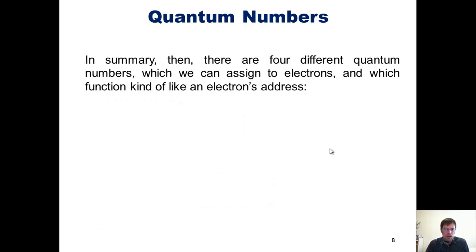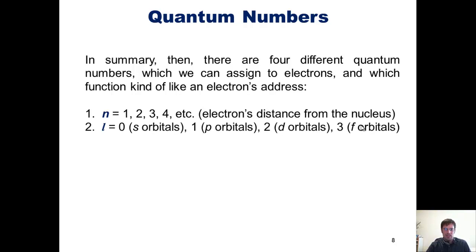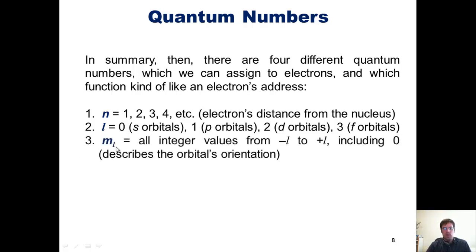In summary, then, there are four different quantum numbers, which we can assign to different electrons, and which function kind of like the electrons' address. The first quantum number is n, the principal quantum number. It can be 1, 2, 3, 4, and so forth. It says the distance the electron is from the nucleus. The second number is l, the azimuthal number. Zero for s orbitals, one for p orbitals, two for d orbitals, and three for f orbitals. Third is the m sub l quantum number. This can be any integer value from negative l to positive l, including zero, and describes the orbital's orientation. And last is m sub s, the magnetic spin number. It can be plus or minus one half.